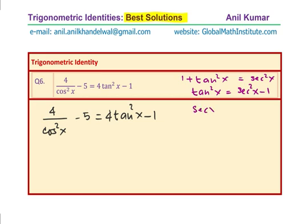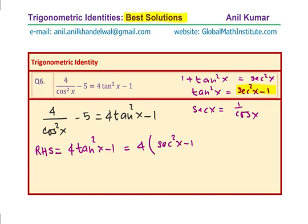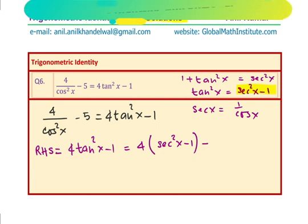You also know that secant x is reciprocal of cos x. Using that, we simplify the right hand side. The right hand side, which is 4 times tan square x minus 1, can be written as 4 times secant square x minus 1 minus 1.